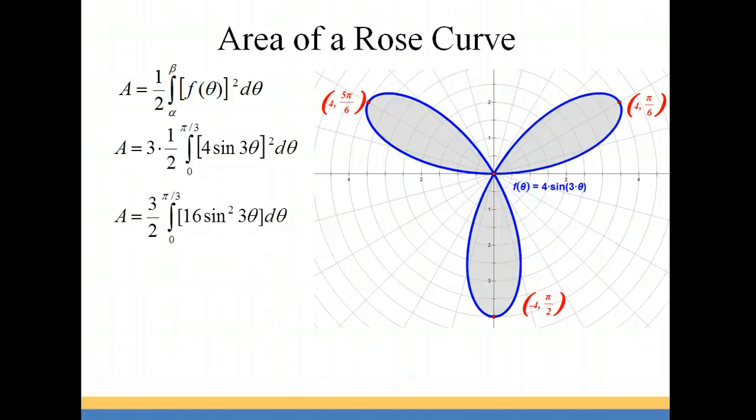So squaring the f of theta, we get 16 sine squared of 3 theta, and then I just multiply the 3 times 1 half. Then I brought the 16 out in front of the integral, so I have 24 times sine squared of 3 theta. And then using my power reducing formula, I'm going to rewrite the sine squared as 1 minus the cosine of twice the angle. So that's going to give me 6 theta for the angle, and then divide it by 2.